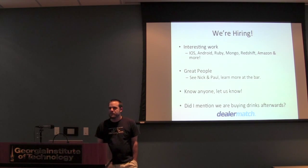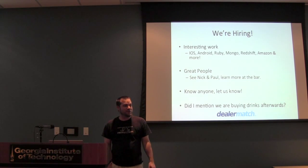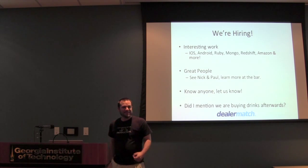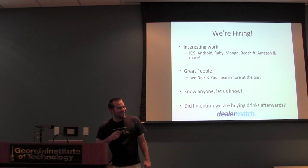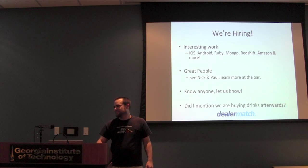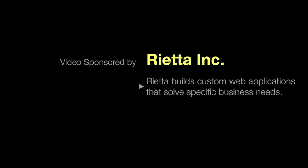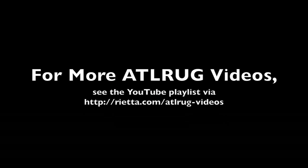All right, anything else? Ken, where are you buying these drinks? It's a public house right next to the Fox, about two or three blocks away. We hope you've enjoyed this video presentation of a talk given at a monthly Atlanta Ruby Users Group meeting. This video has been sponsored by Rietta Inc., an Atlanta-based Rails consultancy that transforms high-level business problems into technical solutions. For more videos like this one, please see the ATL Rug videos playlist.